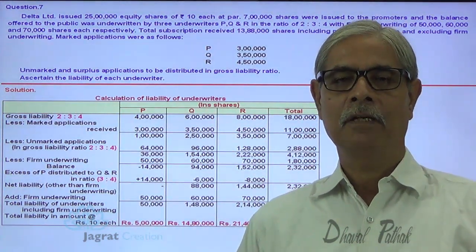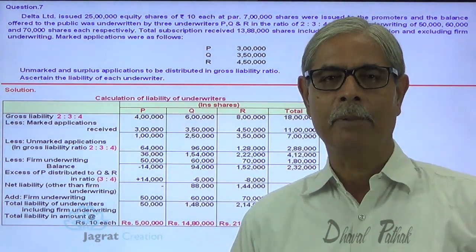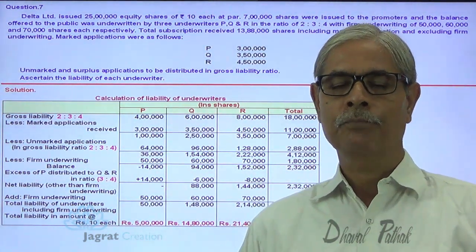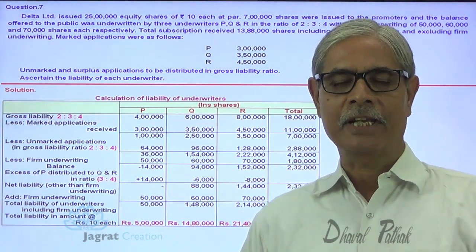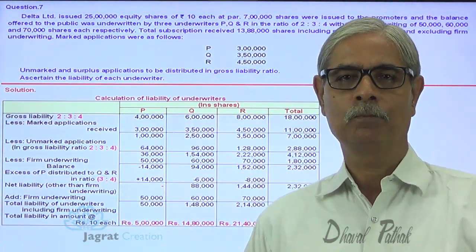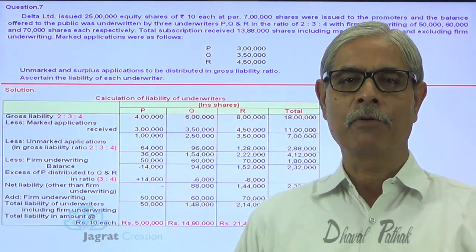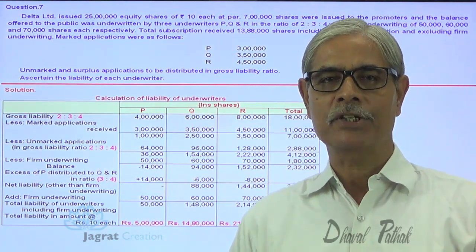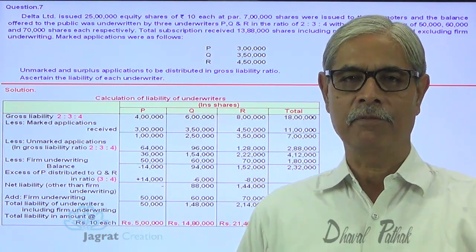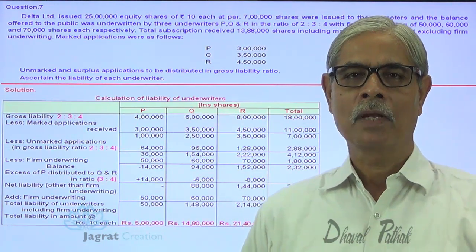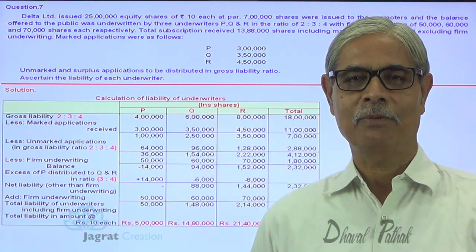Notice that unmarked applications are distributed in proportion of gross liability. Marked applications are straightway deducted from gross liability. Credit to each underwriter is given for firm applications, and in light of that, the liability of each underwriter is worked out. I feel that you have followed all these things. Thanks to all of you.